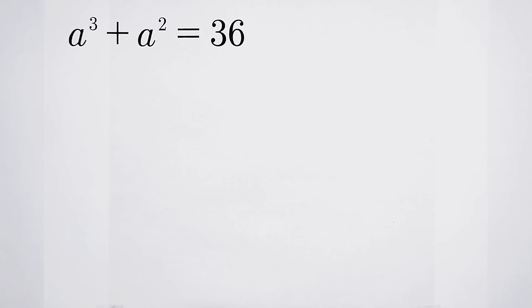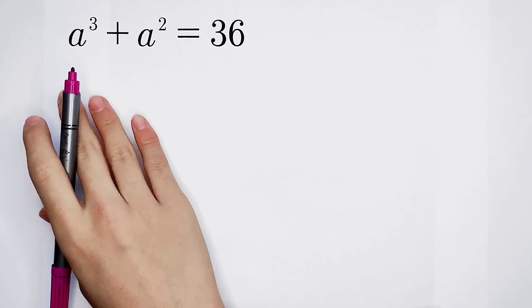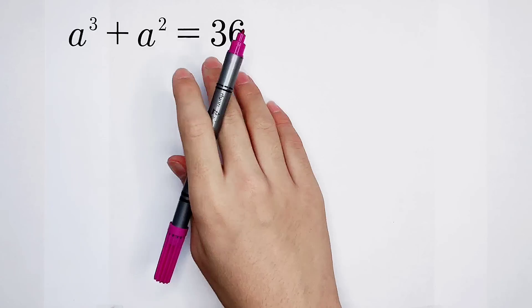Welcome back to Math We Know. Today we're going to solve this equation: a cubed plus a squared is equal to 36.